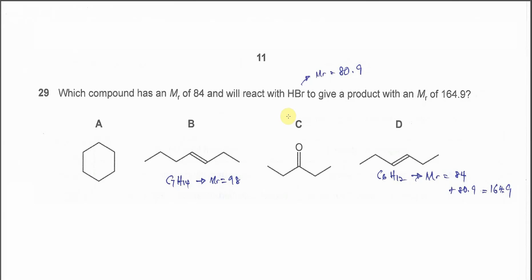Question 29. Which compound has an MR of 84 and will react with HBr to give a product with an MR of 164.9?